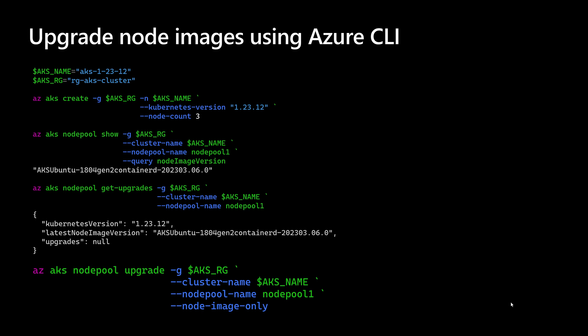We can also upgrade node images using the Azure CLI. In this sample PowerShell script, an AKS cluster is created, then we view the version used within the default node pool — Ubuntu 18.04. Running az aks nodepool get-upgrades shows possible upgrades. If no new upgrade is available, nothing is displayed. To start the upgrade process, run az aks nodepool upgrade, specify the node pool name, and use the flag --node-image-only. This ensures only the node image is upgraded, keeping the current Kubernetes version while updating to the newest image pushed by Azure.